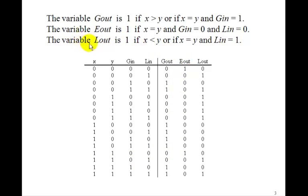And Lout is going to be 1 if x is less than y. That is, if it's 0, here we have these four 0's and these four 1's, so Lout is 1.